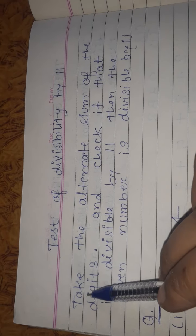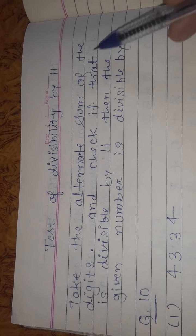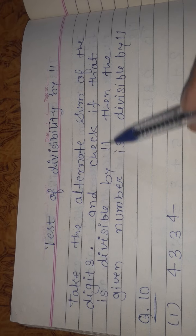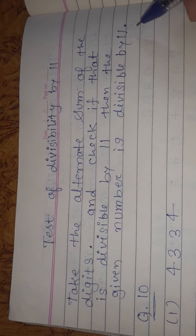The test is: take the alternate sum of the digits and check if that is divisible by 11. Then the given number is divisible by 11. This is the theory of the test.